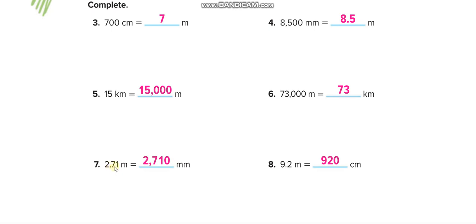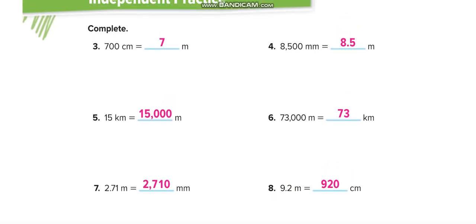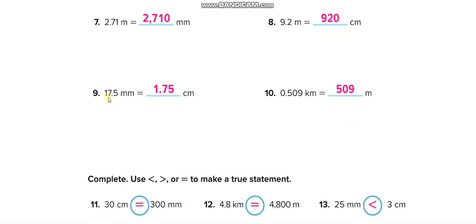2.71 meters to millimeters — multiply by 1000. 1000 has three zeros, so move the decimal three times; digits finish, so we add a zero and move again. 9.2 meters to centimeters — multiply by 100, so move the decimal two places. From centimeters to millimeters: 1 centimeter is 10 millimeters, so divide by 10 — moving the decimal one place to the left, since 10 has only one zero.